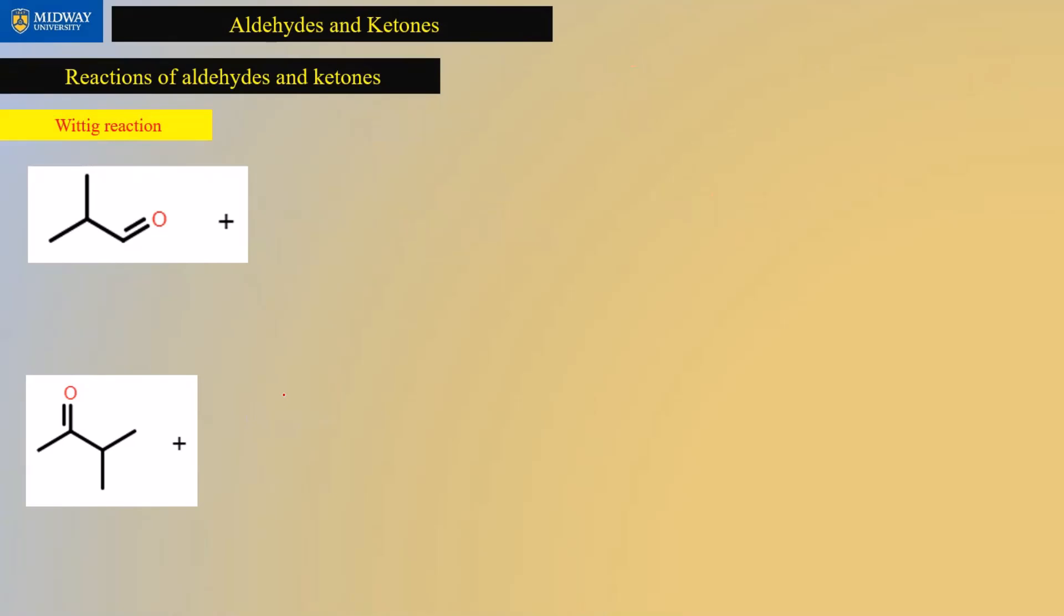We're going to the last and final reaction. And that's Wittig. Wittig is a classic in almost any exam, including my class or any exam outside of my class. You know, we looked at Wolf-Kishner, right? We went from an aldehyde to an alkane, ketone to an alkane. In a Wittig reaction, we go from an aldehyde to an alkene, a ketone to an alkene.